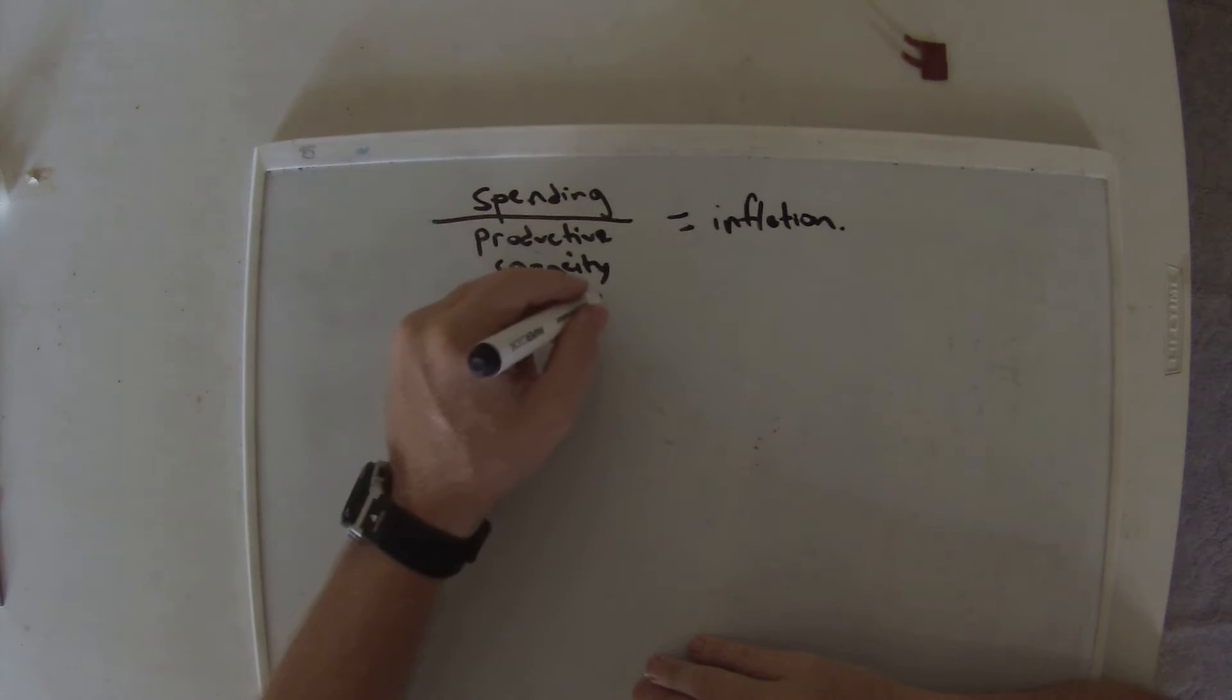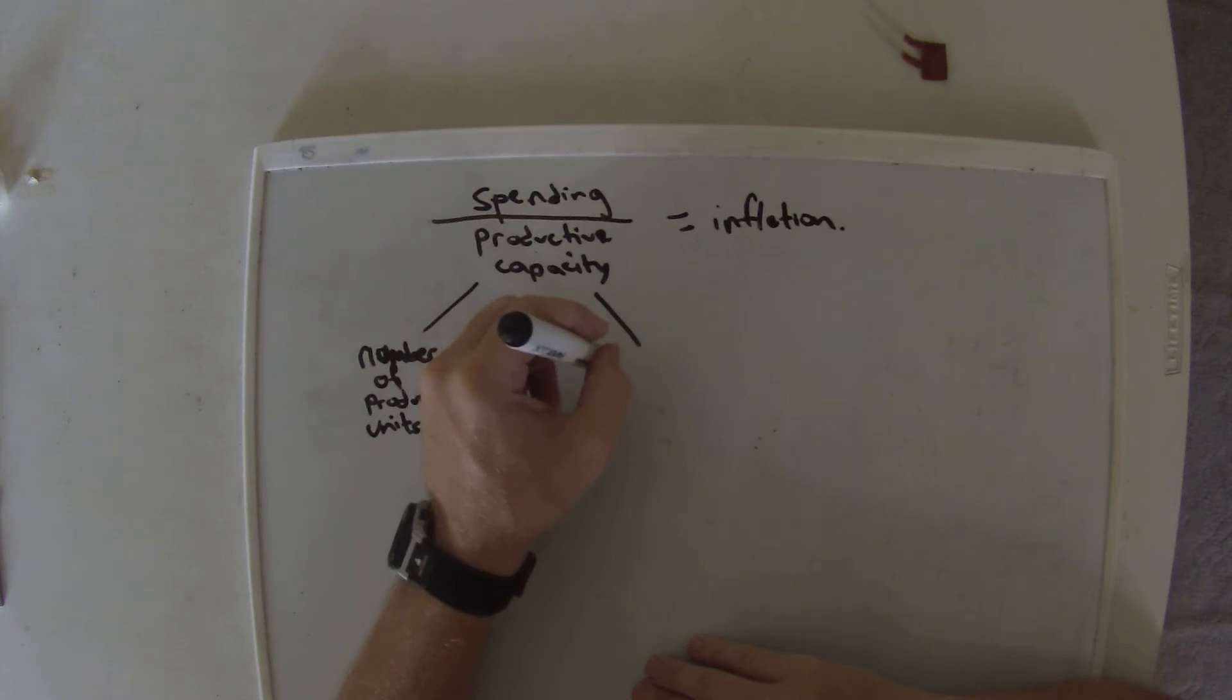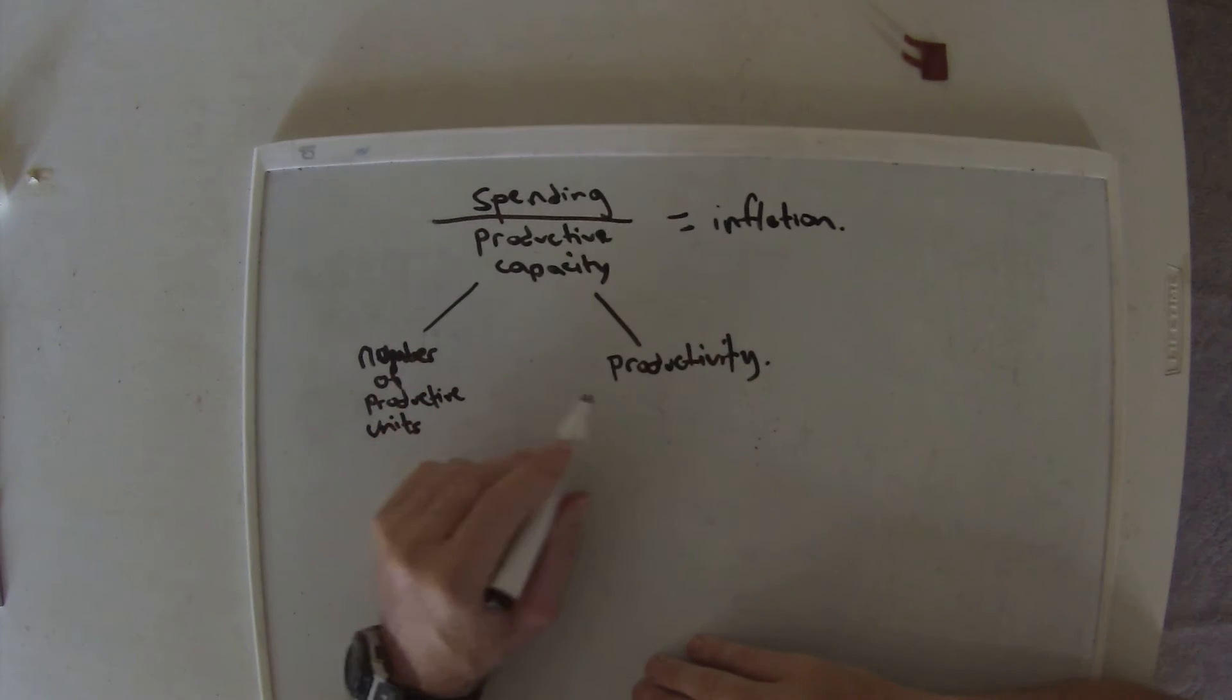The first way we expand on that is a thing which I call the number of productive units, and the productivity of each. This is where coconut man works his way back in and the concepts of productivity work their way back into the equation.